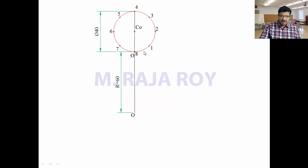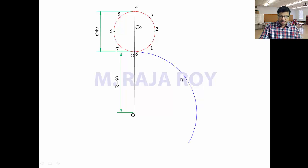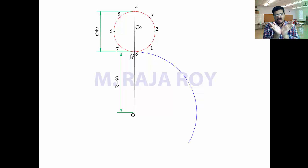Now divide the circle into 8 parts as shown here. On this circle, give the numbering in the counterclockwise direction — as already observed, since it is rolling in the clockwise direction, you give the numbering in the counterclockwise direction. One more important observation: this particular epicycloid can be drawn in any orientation — starting with the vertical position or with the inclined position. Whatever the position, you will get the same curve.